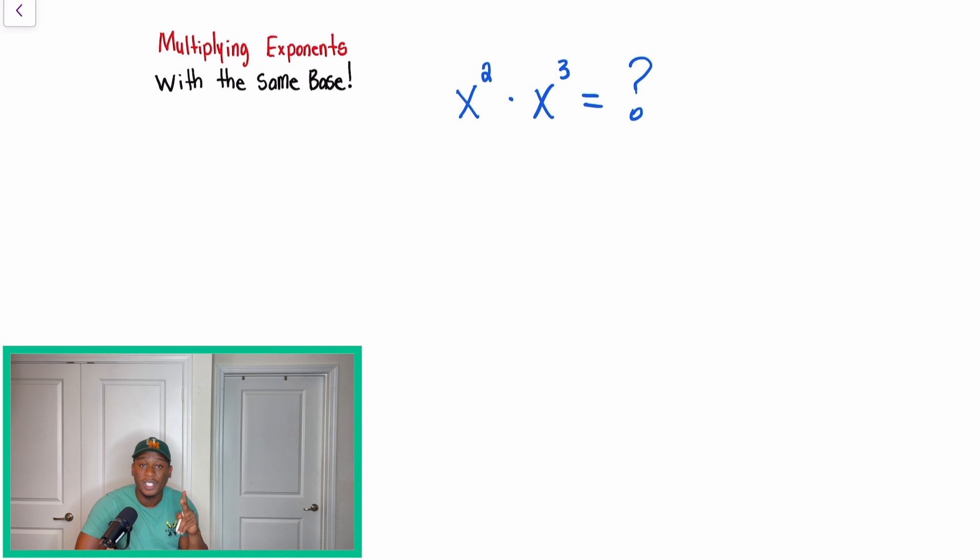So guys, I got two situations where we're multiplying exponents, and I'm going to explain the difference. So the first one, we're going to be calling the product rule. And you guys, you don't need to know the name of the rule, okay? I'm just letting you know so that you know.